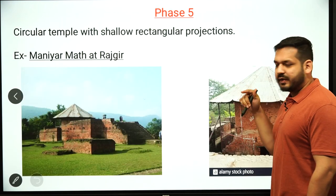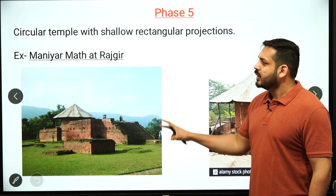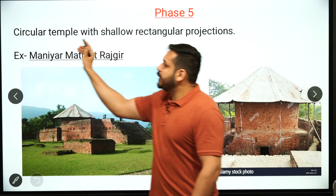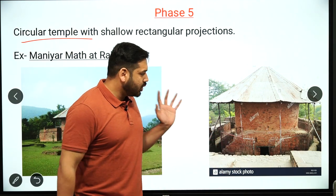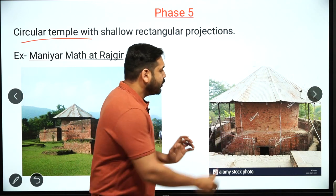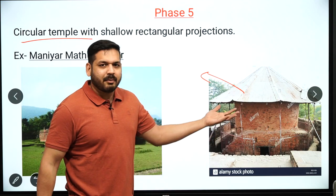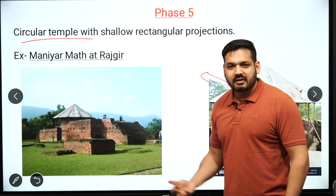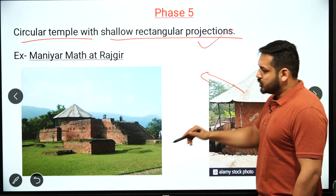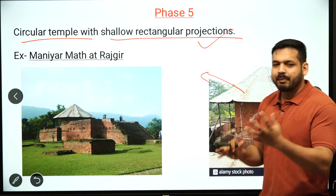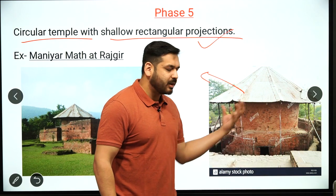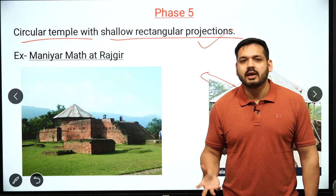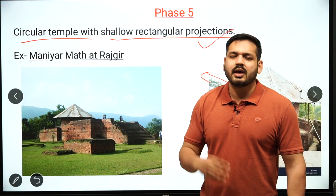In Phase 5, the temple takes a circular shape. A good example is the Raja Gere in Bhara. The main temple is in circular form with shallow rectangular projections. The roof of this example was damaged, but the circular plan of the temple structure is the defining feature of this fifth and final phase of development.